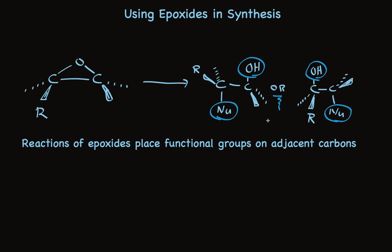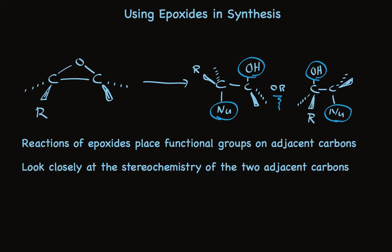The second aspect of epoxide chemistry that we need to pay special attention to is stereochemistry. Because these ring-opening reactions are stereospecific, there will be a specific relationship between the nucleophile and the hydroxyl group that is dictated by whatever stereochemistry the reactant had. Keeping these two themes in mind, let's look at a few examples of the use of epoxides in synthesis.